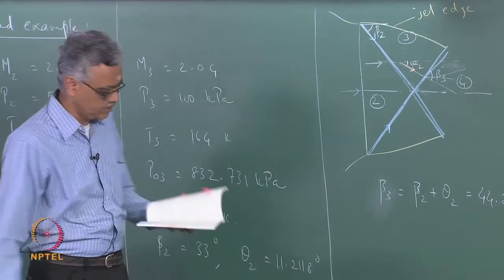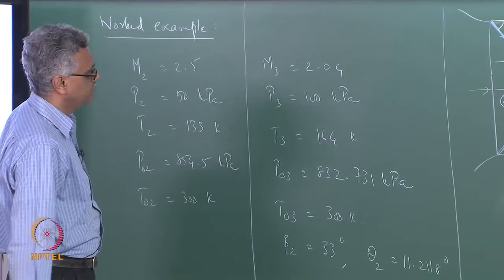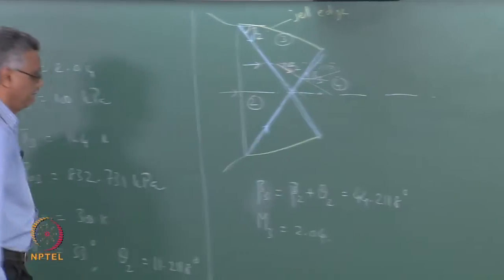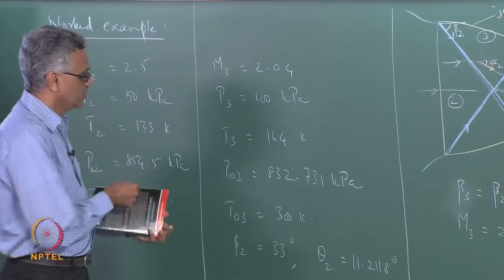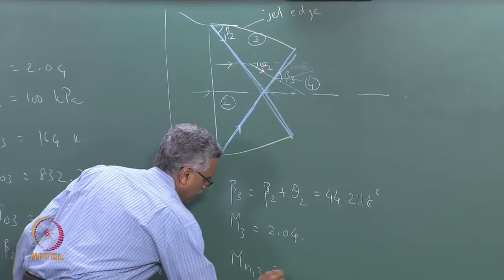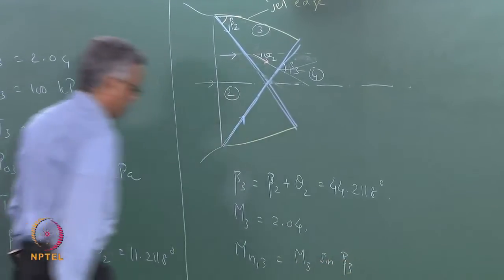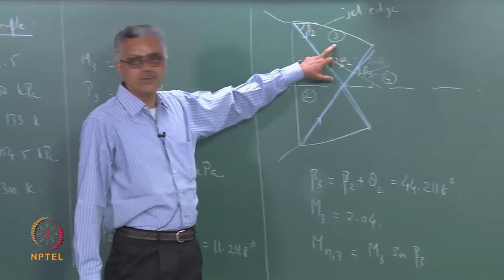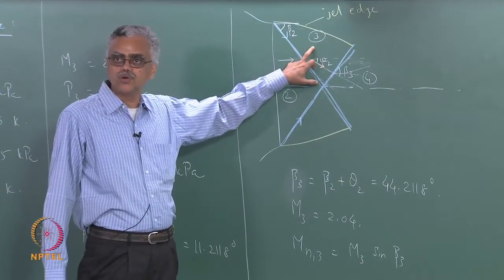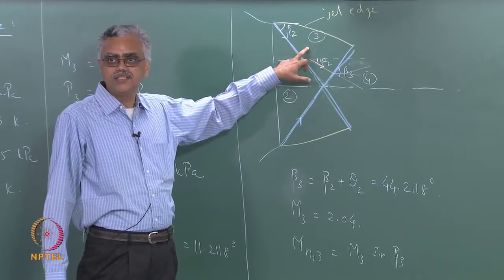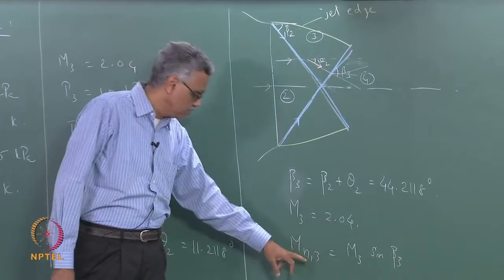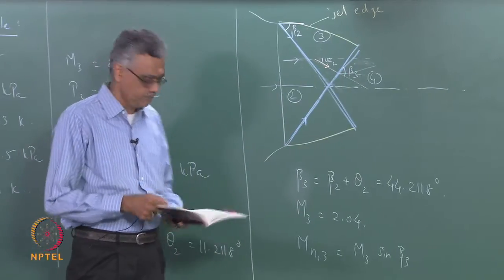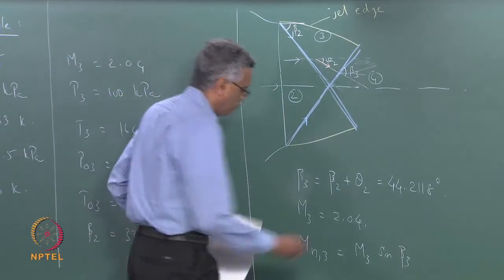With beta3 = 44.2118 degrees and M3 = 2.04, we compute the normal Mach number: Mn3 = M3 × sin(beta3) = 1.4225. Note this Mn3 is different from the Mn3 obtained earlier from the normal shock table for the previous shock—the angles have changed, so this is the normal Mach number approaching the new shock wave.